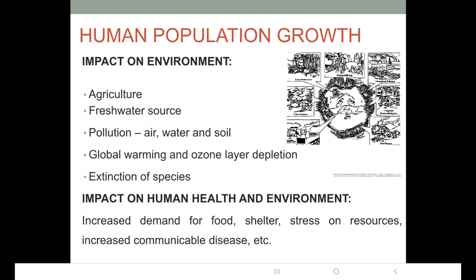When a mat of plants is formed on the water surface, it affects the penetration of light into the water body. The fish and other organisms living below the water will not get proper light. There is also a decrease in the level of oxygen in the water body as a result of eutrophication. With no sunlight and no oxygen, the water becomes uninhabitable for various animal and plant species, resulting in their death.